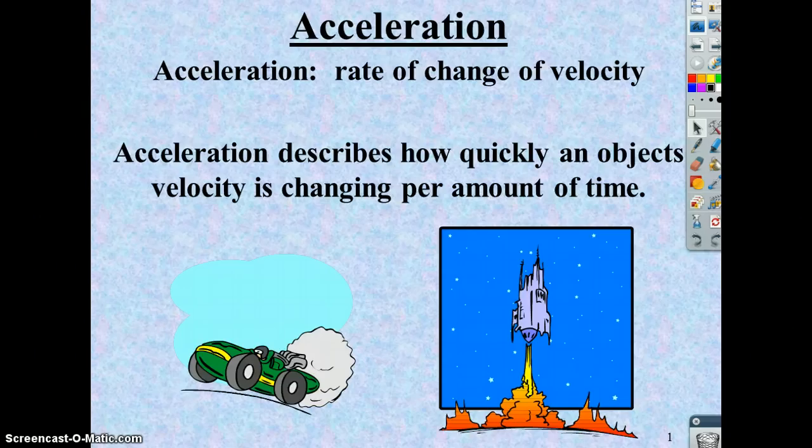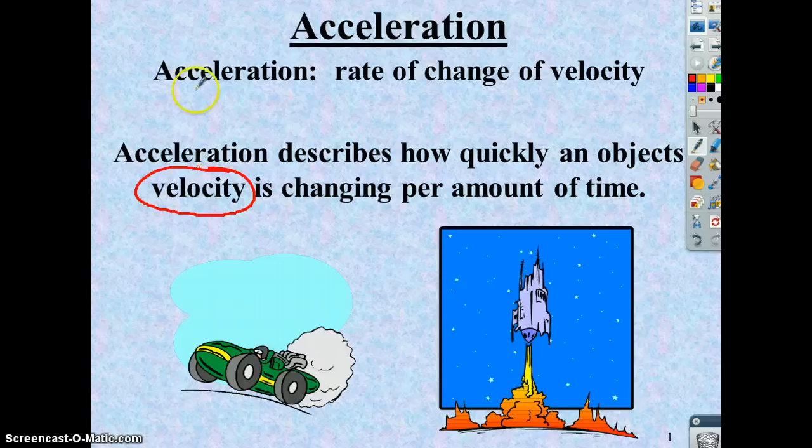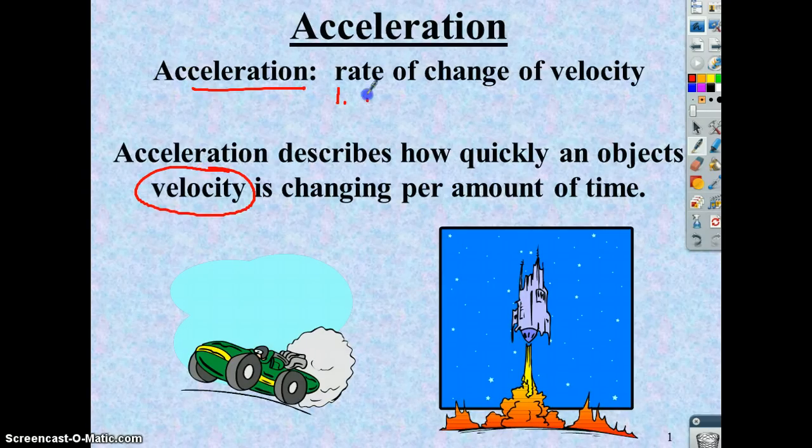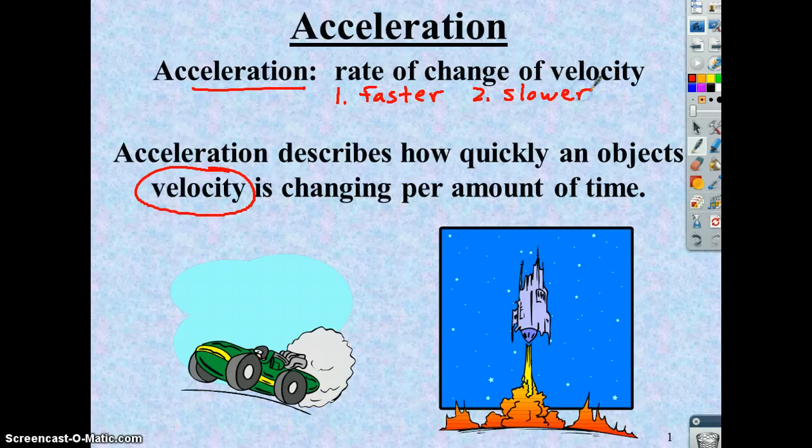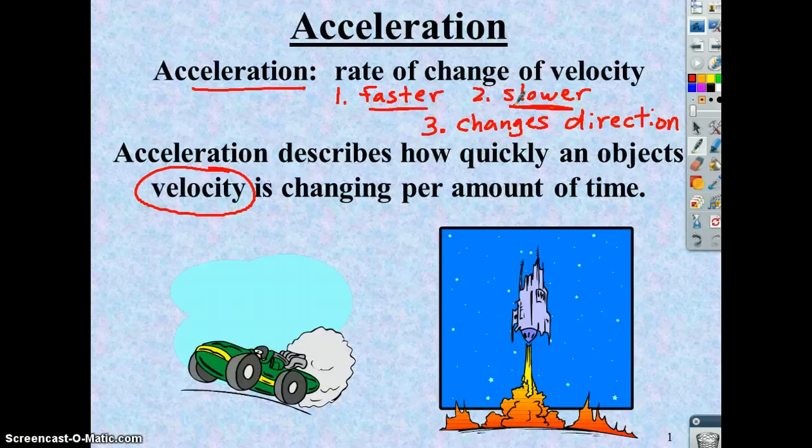Notice acceleration is specifically the rate of change of velocity. We spent good time the other day knowing the difference between velocity and speed. So something can accelerate one of three ways: if it's getting faster, if it's getting slower, and the third way, which we won't cover too much in this set of notes, is if it changes direction. Today we're only going to deal with getting faster and slower because we're only in one-dimensional motion, which means we're going along one line, so we're not changing direction yet.